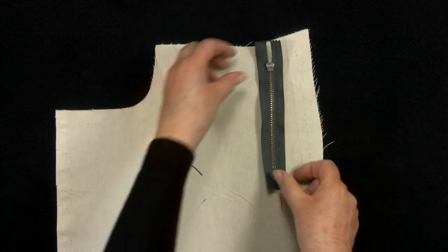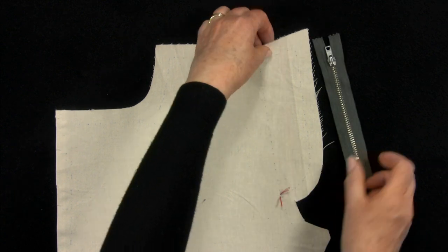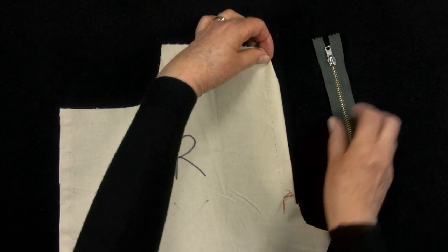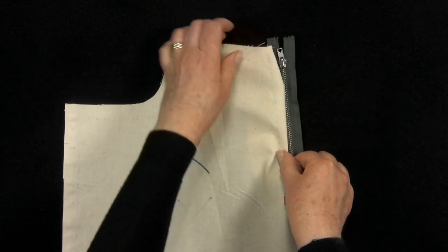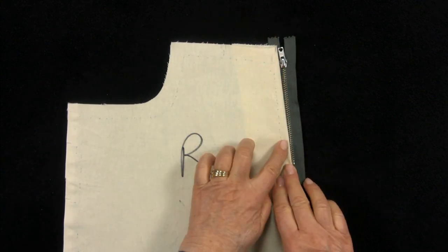Firstly, we machine the zip to the right front. The zip is placed face down. I want the zip teeth to end up about half an inch from the centre front. Like so.